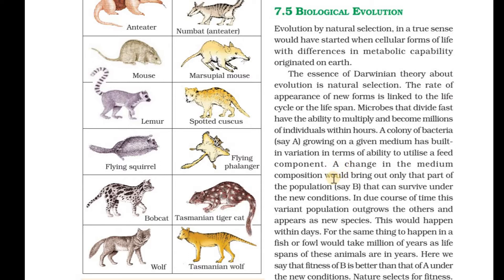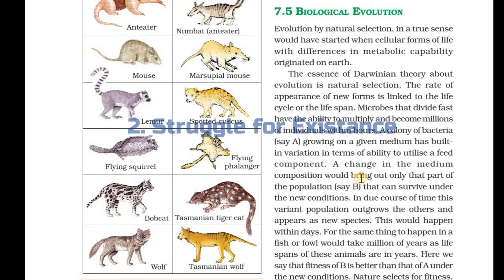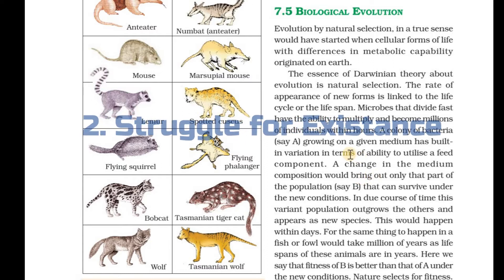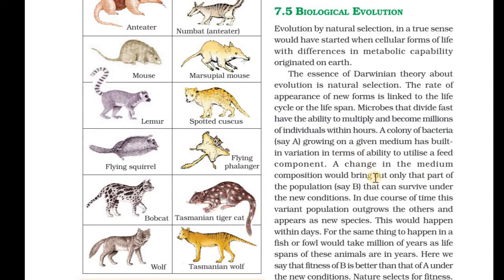Overproduction — young ones form, but not all survive. Now let's talk about the struggle for existence. It's important because there is a lot of multiplication, the population is suddenly increasing, and the answer to that is competition.